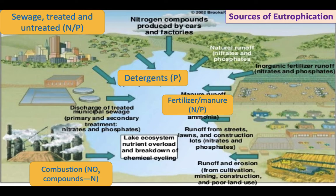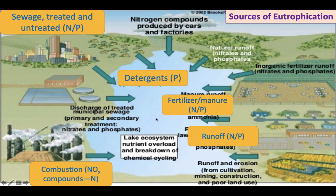Of course, there's fertilizer and manure from concentrated animal feeding organizations like CAFOs and feedlots, which can introduce large amounts of nitrogen and phosphorus into the ecosystem. Runoff from parking lots and urban areas can do the same thing. Most of these are non-point sources of pollution, although if you've got a pipe of wastewater being dumped directly in, that could be a point source.